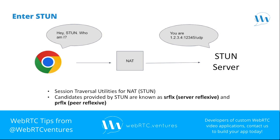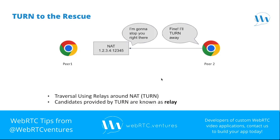These ICE candidates can be of type server reflexive or peer reflexive, the latter being a variant of the former. There is a third type of ICE candidate that is used when a direct connection is not possible — for instance, when the type of NAT doesn't allow it or when there are firewall restrictions. These are the scenarios where relay ICE candidates are useful. A relay ICE candidate is the IP address of a TURN server — Traversal Using Relays around NAT — that a peer made a previous arrangement with.